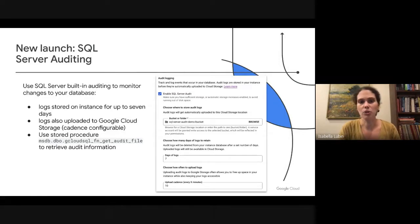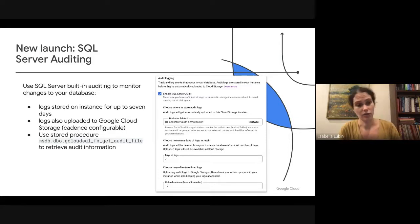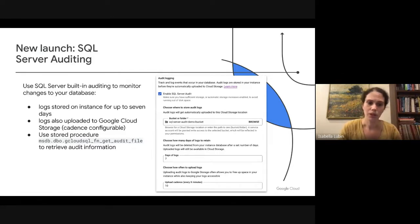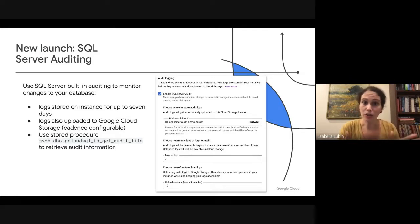There's a new launch I'd like to highlight: support for SQL Server auditing. This allows you to use the same auditing functionality you're already using on-premises directly with a managed service. When you enable auditing, logs created from your specified audits are stored on the instance for up to seven days — which is configurable — and also uploaded to Google Cloud Storage at a configurable cadence. You can use a stored procedure to read audit logs while they're still on the instance, or access the Cloud Storage bucket to consolidate logs across instances. Auditing is configured on the instance, and you specify audit specifications at the server level or database level.